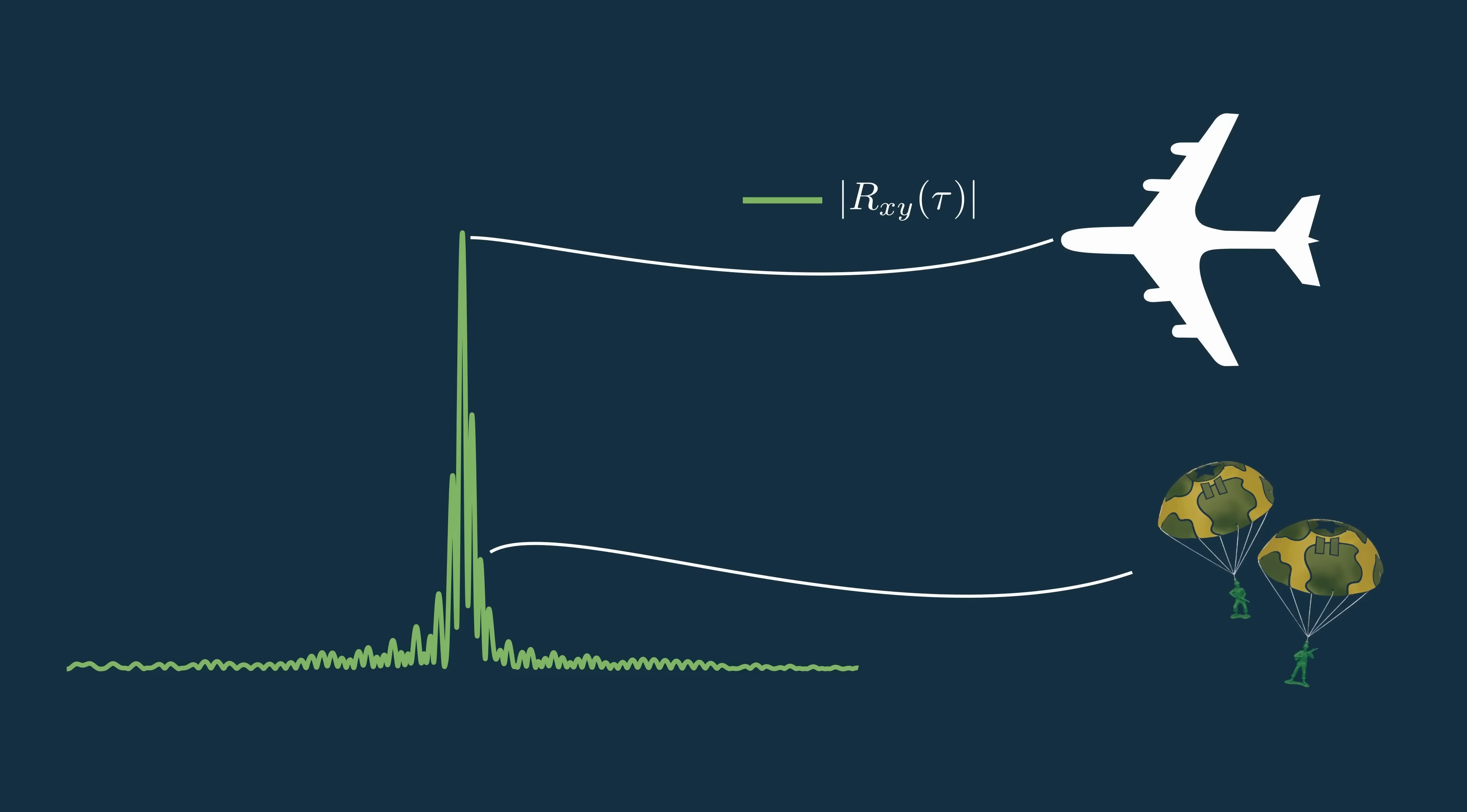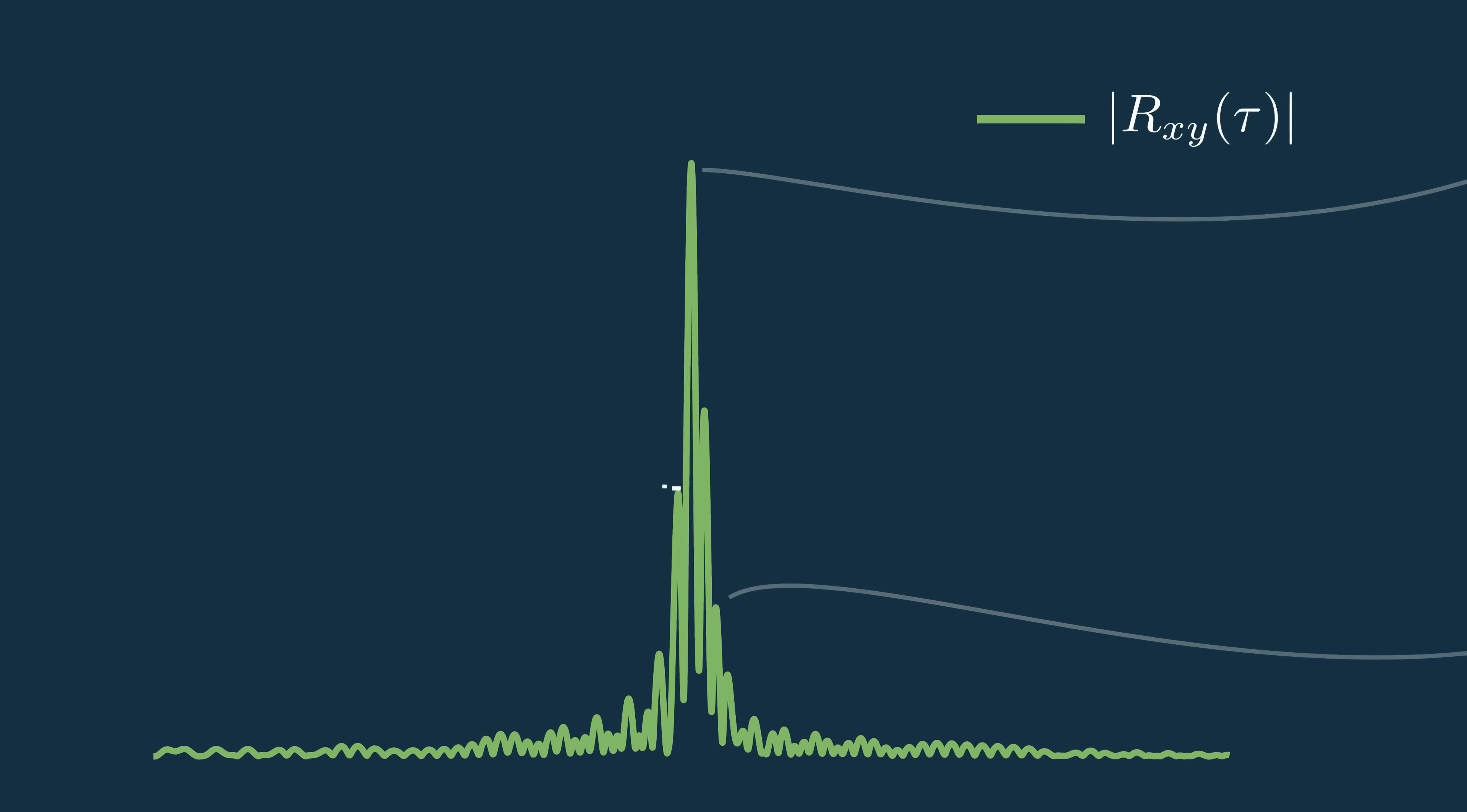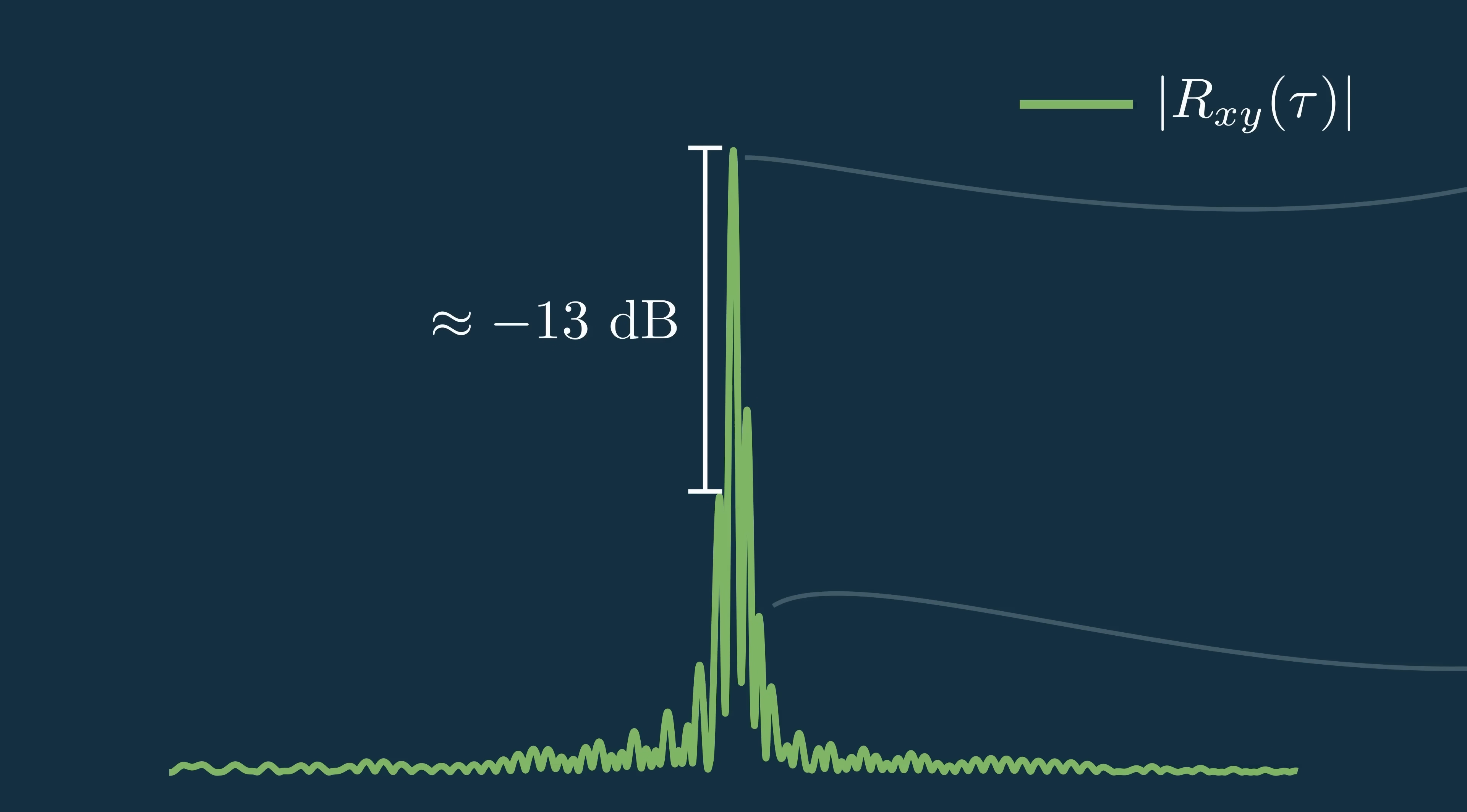But looking at this return, we really only see one and what looks like some noise. The issue here is that the plane's return is large enough that, even though the side lobes are like 13 dB down from the main lobe, 13 dB down from this large return is still larger than the main lobe of the return from the person, so the person just gets masked.